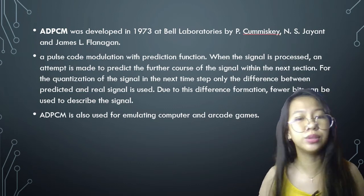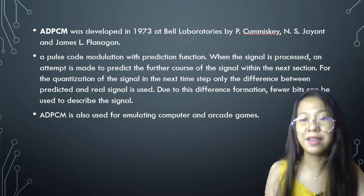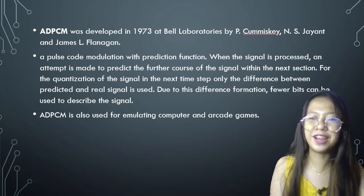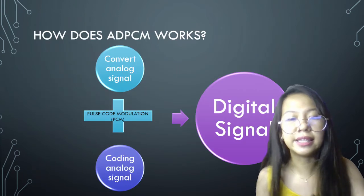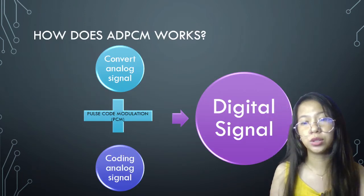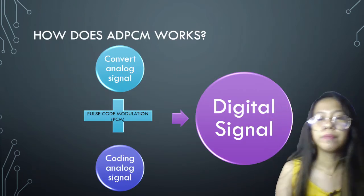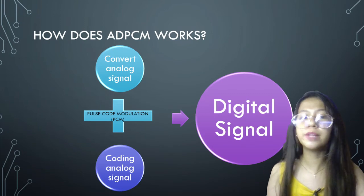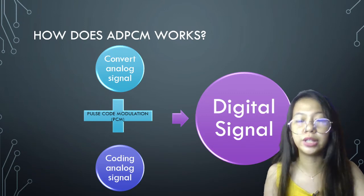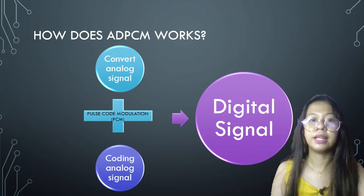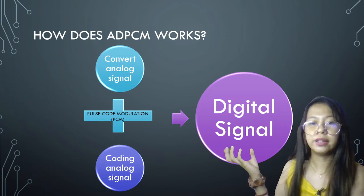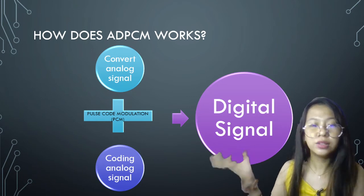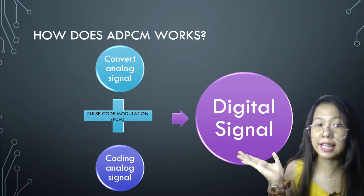ADPCM is also used in emulating computer and arcade games. How does ADPCM work? Using Pulse Code Modulation, PCM, it converts and encodes the analog signal into a digital signal.